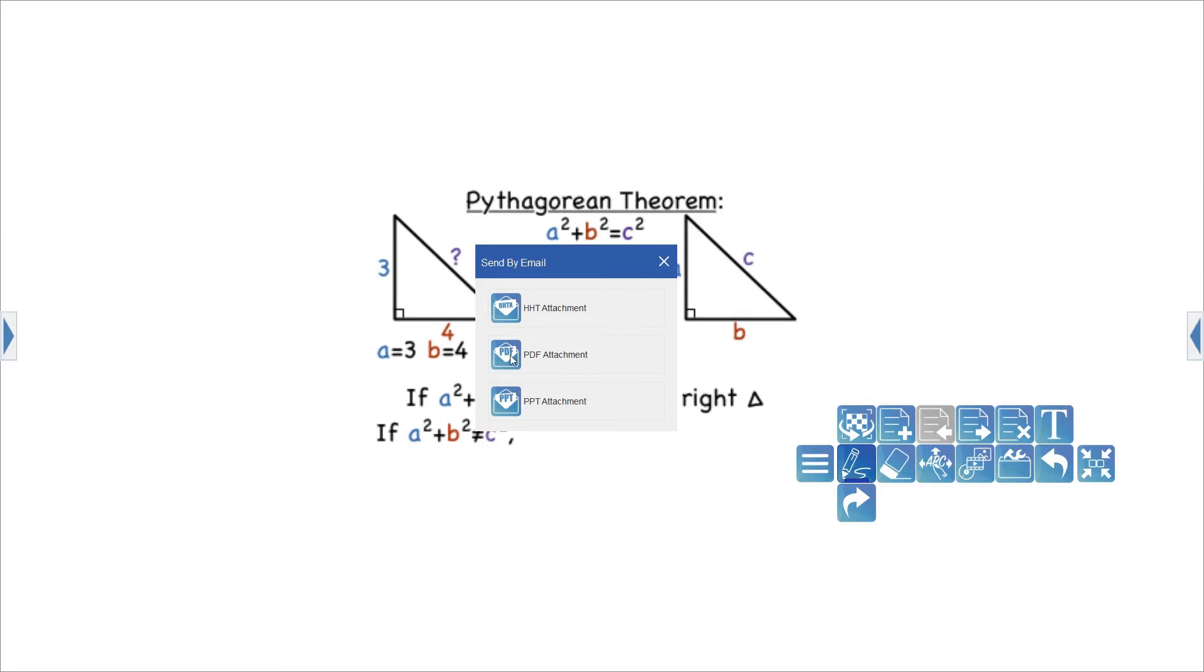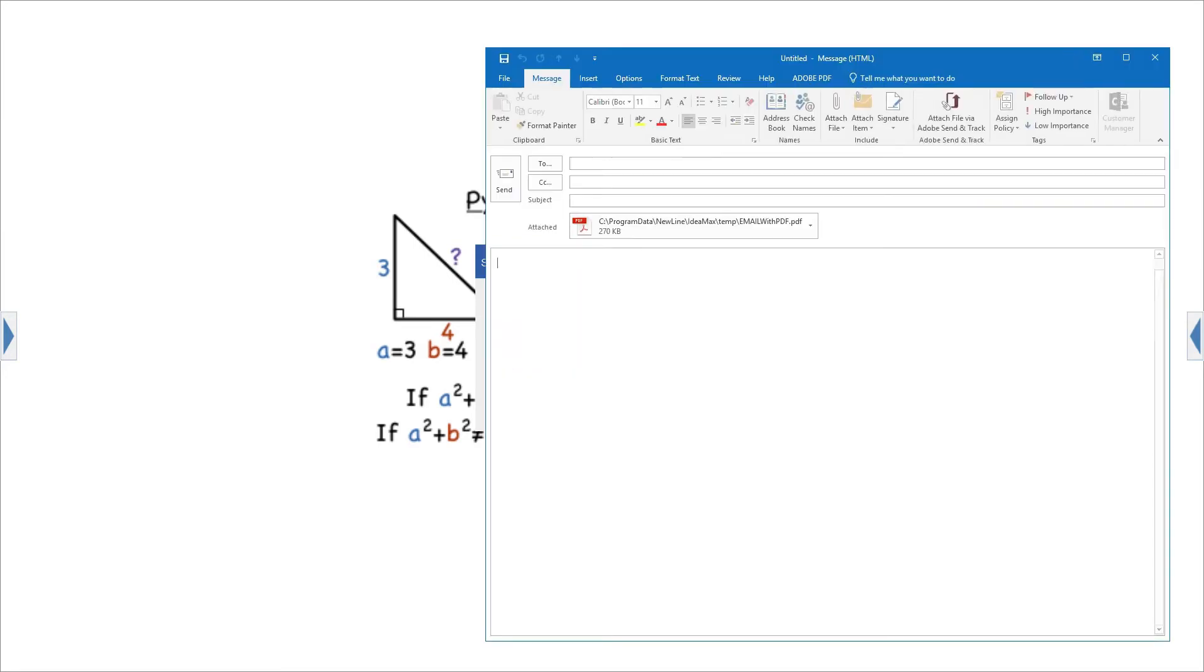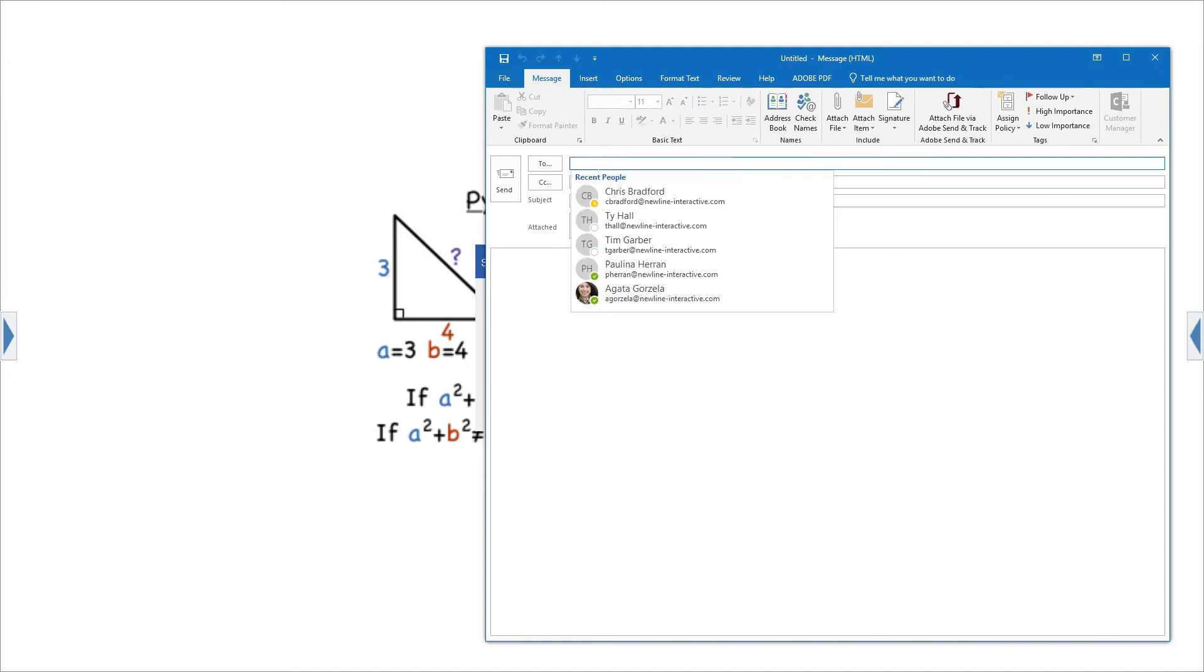Once you select a file type, IdeaMax will pull up a new message window in your default mail app. In this case, it pulled up a window in Outlook. The presentation will automatically be attached.